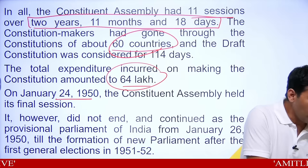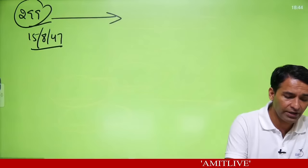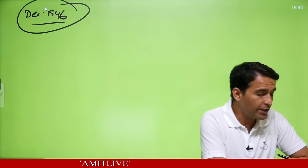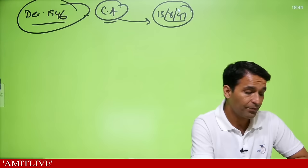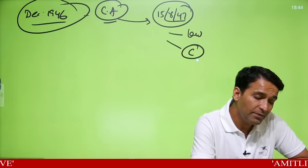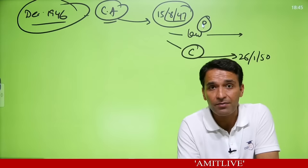But the law-making function continued — it was the parliament of the country at that time. It continued as parliament because the new parliament based on the new constitution needed elections, which took time. Elections started in 1951 and concluded in 1952, giving India a democratically elected Lok Sabha based on universal adult franchise.